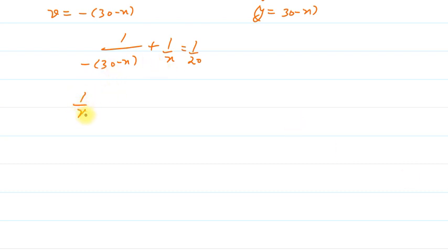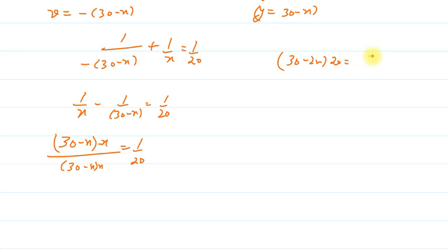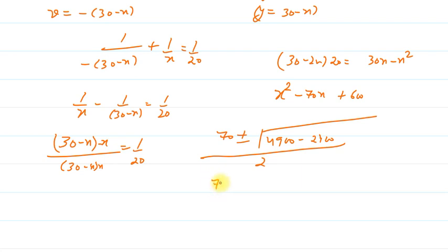Solving: 1/x - 1/(30-x) = 1/20. Taking LCM: (30 - x - x) / [x(30-x)] = 1/20. Cross multiplying: (30 - 2x) × 20 = 30x - x². The equation becomes x² - 70x + 600 = 0. Using the quadratic formula: x = (70 ± √(4900 - 2400))/2 = (70 ± √2500)/2 = (70 ± 50)/2.